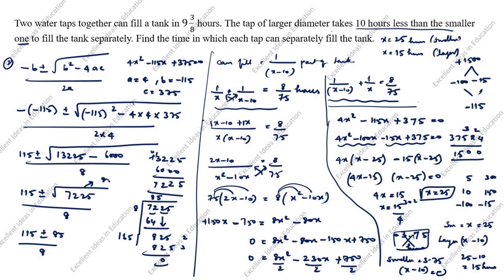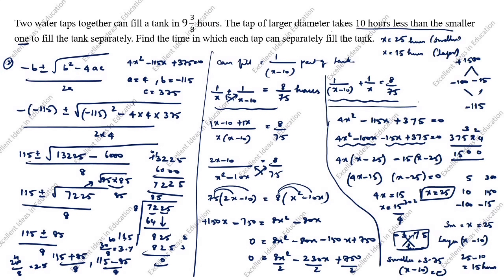So we get x = 25 or x = 3.75. As before, x = 3.75 gives a negative value for the larger tap (3.75 minus 10 = minus 6.25), so we reject it. Taking x = 25: smaller diameter tap fills the tank in 25 hours, larger diameter tap fills it in 15 hours. The same answer is obtained by both methods — you can follow whichever is easiest for you. Thanks for watching this video.